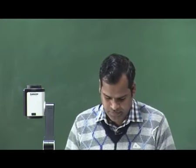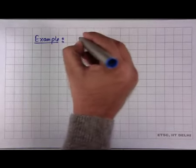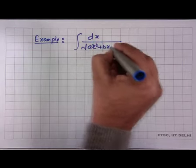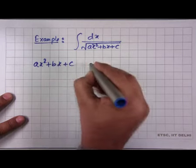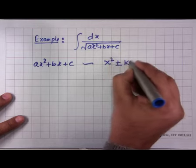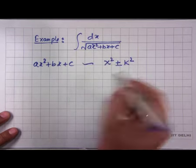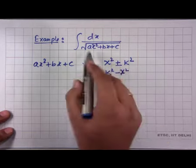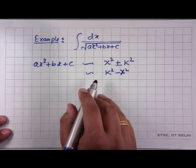Further, I will show the example of ∫dx/√(ax²+bx+c). The idea is the same: we write ax²+bx+c in the form x²±k² or k²−x², depending on the sign of a and the discriminant. Depending on this form, the appropriate formula is applied.